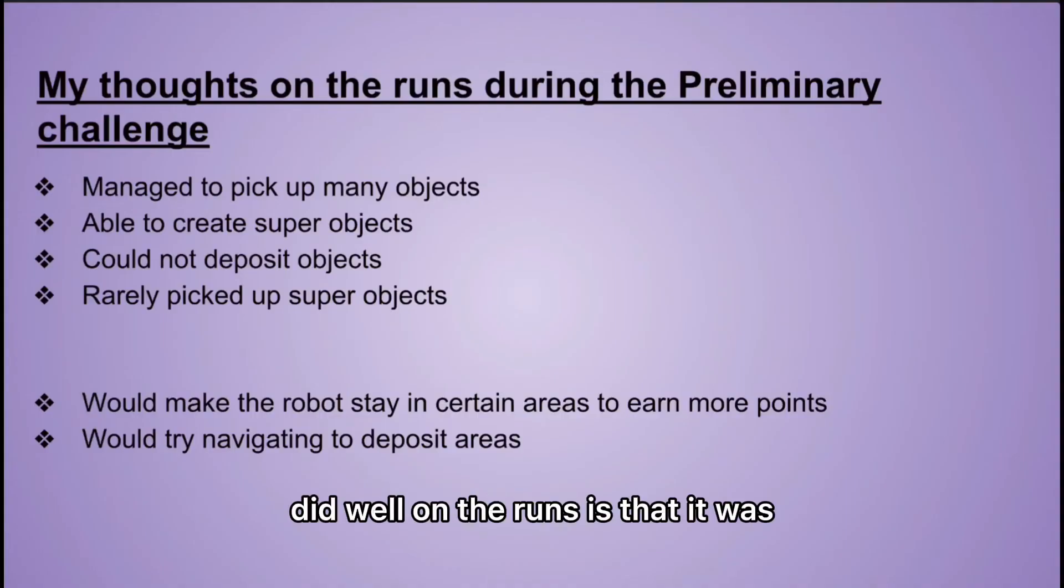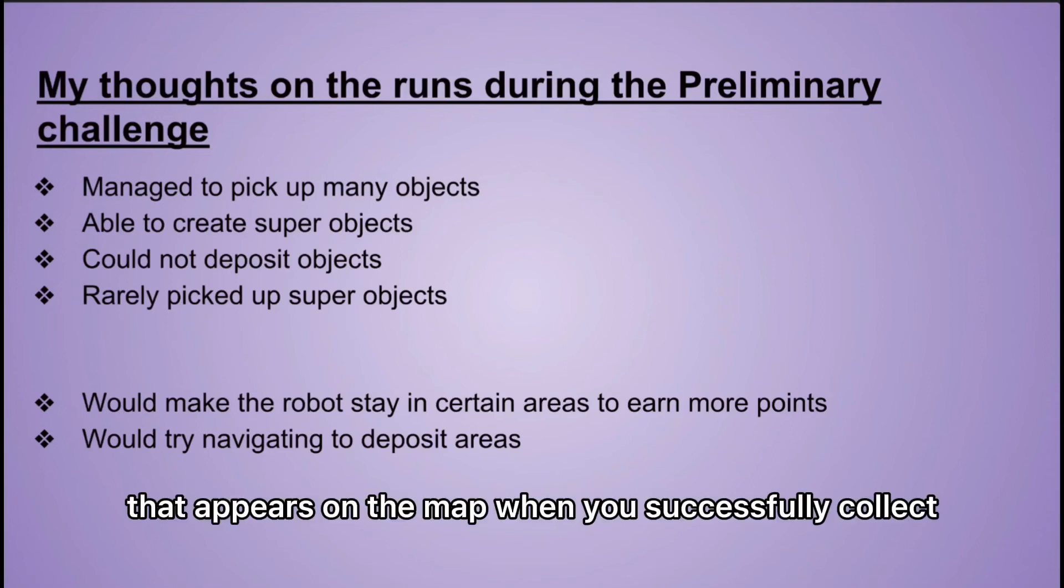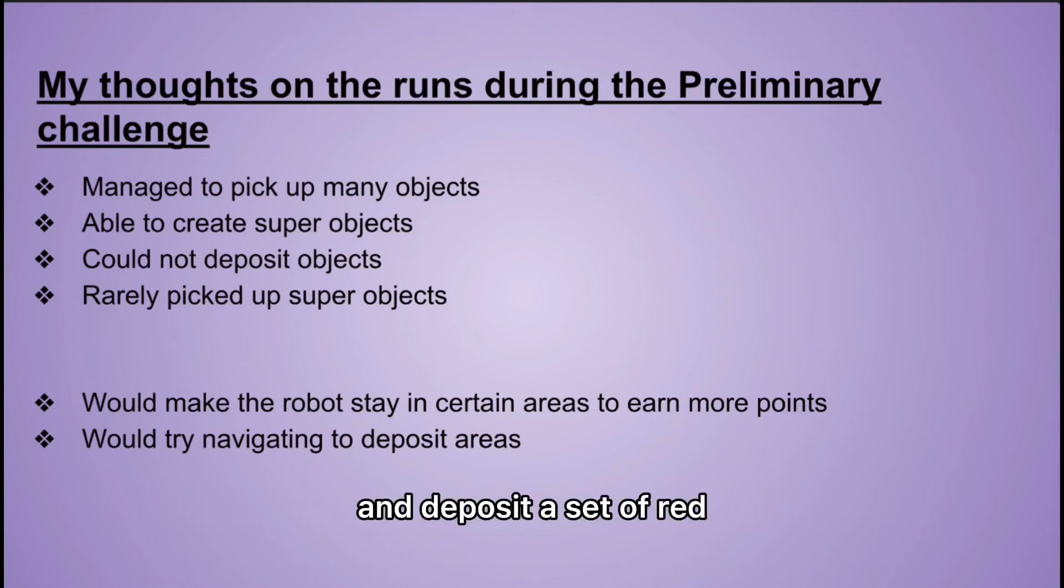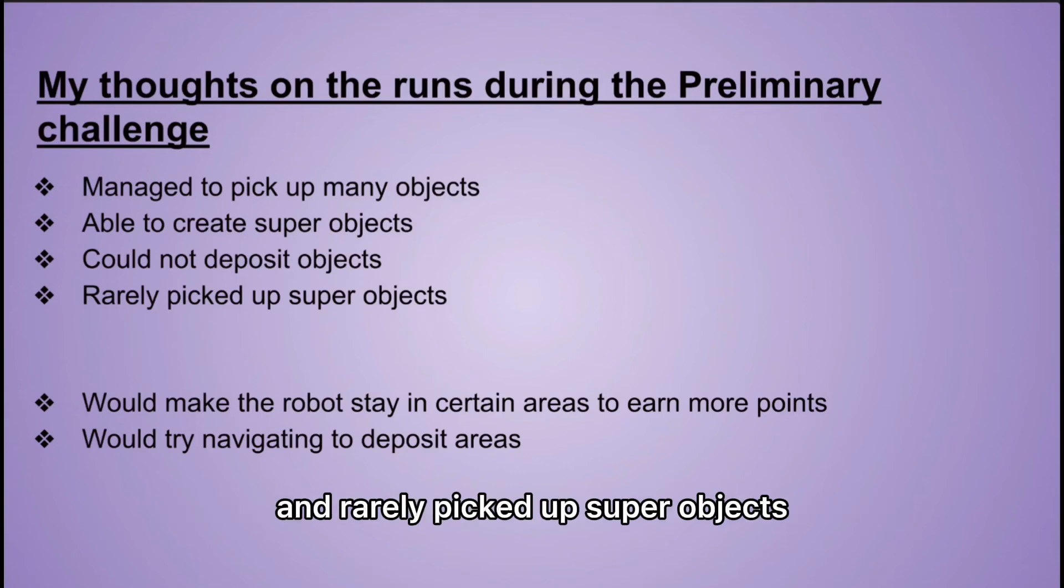What I think my robot did well on the runs is that it was able to pick up most of the objects it comes across and create a super object, which appears on the map when you successfully collect and deposit a set of red, green and blue objects. Even so, my robot was not able to find the deposit area easily and rarely picked up super objects.